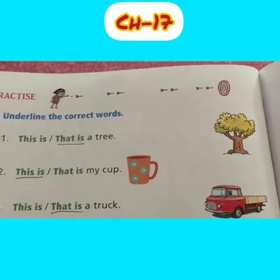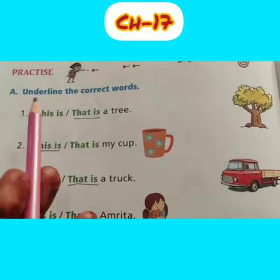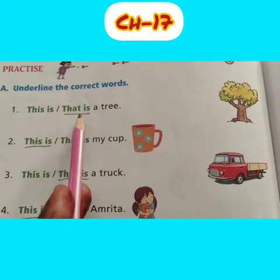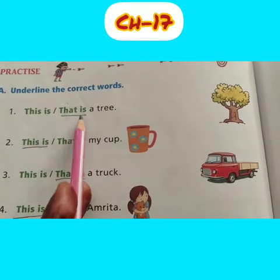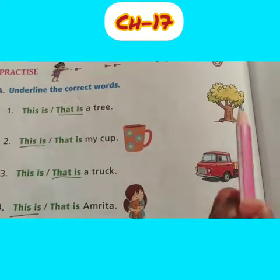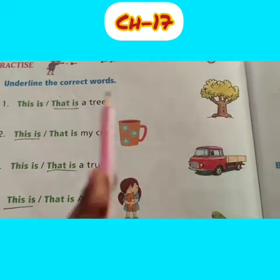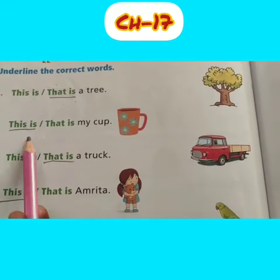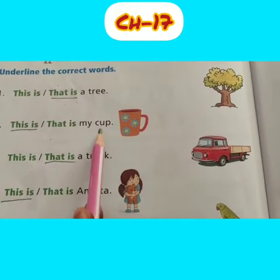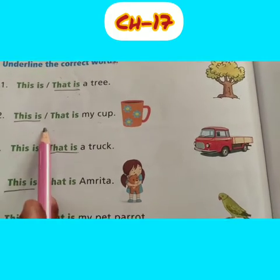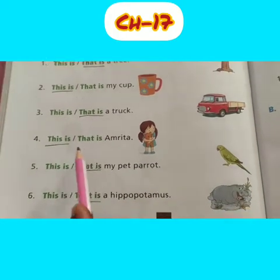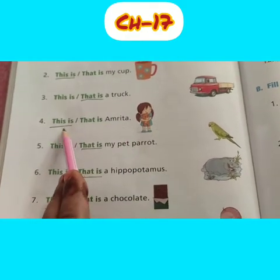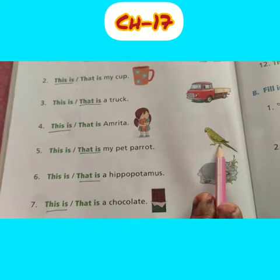Turn your page — you see the exercise here. Underline the correct words: 'this is / that is' — a tree. You see, the tree is far away, so which do we use? 'That is'. Then you see the cup — the cup is very near, so which do we use? 'This is'. Like this, fill the exercise. You see Amrita is very near — we use 'this is'. And the parrot is far away, so we use 'that is'.